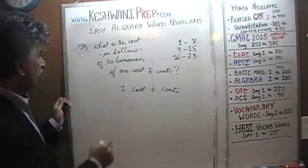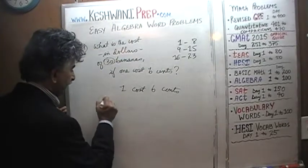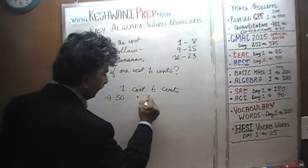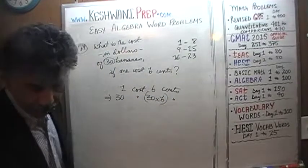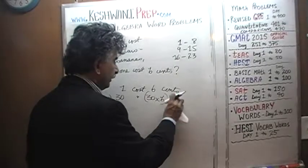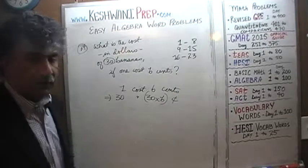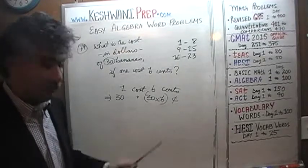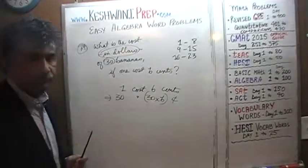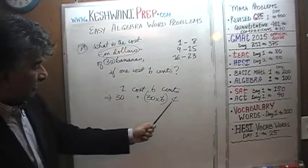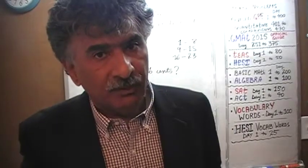If 1 costs B cents and we want to buy 30 of them, 30 of them should cost 30 times as much — so 30 times B cents. That's very simple and straightforward. But we cannot leave the answer as this, because the question specifically asks us in terms of dollars, so we need to convert this amount expressed in cents into dollars.